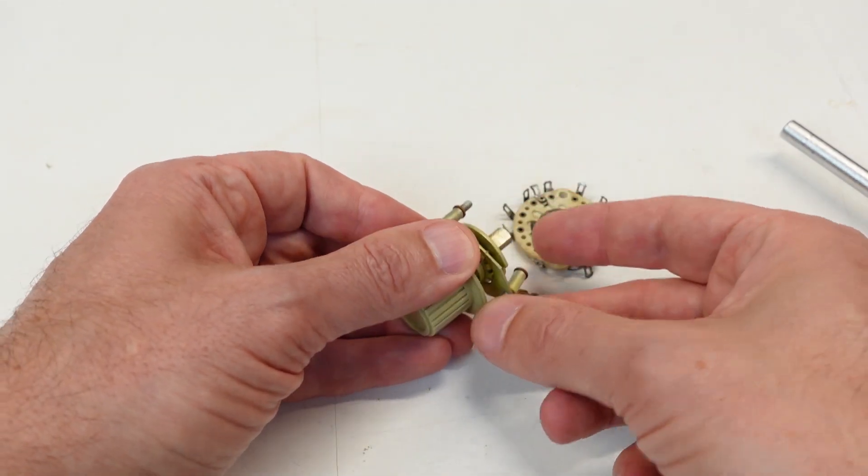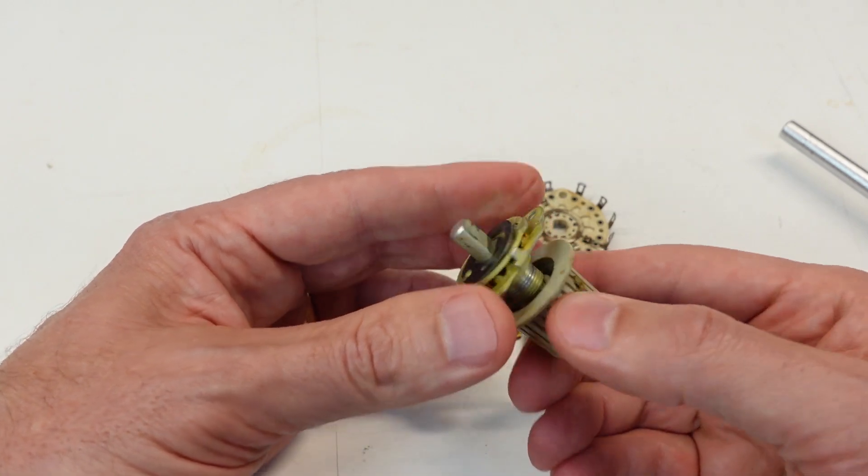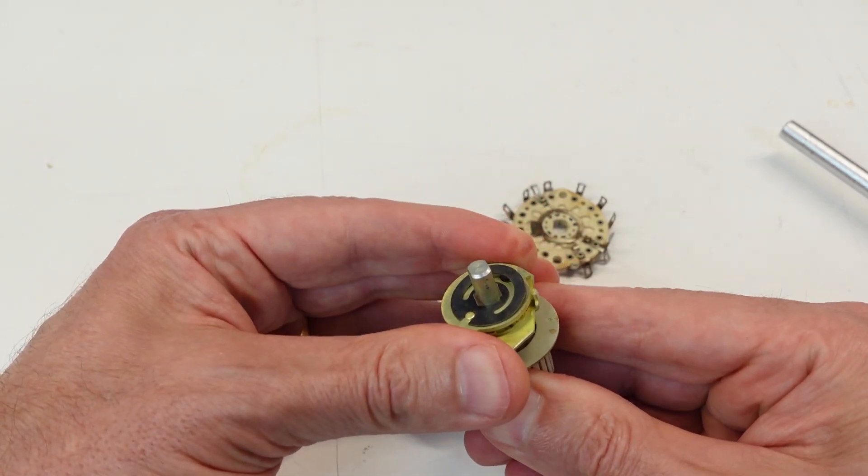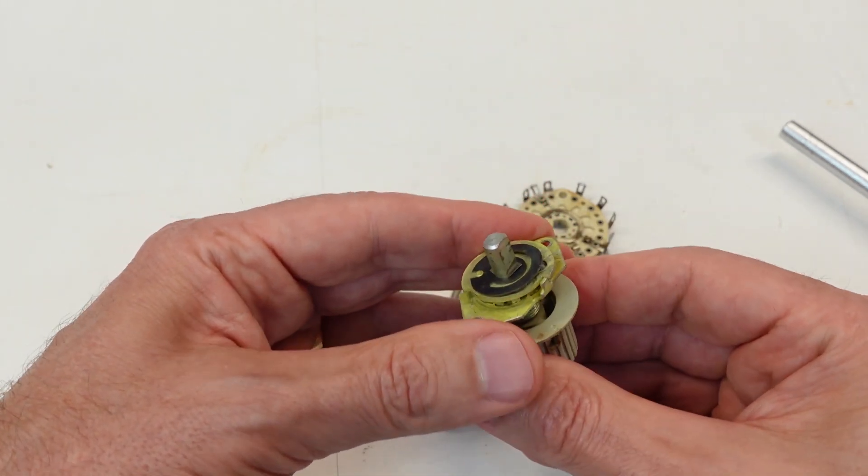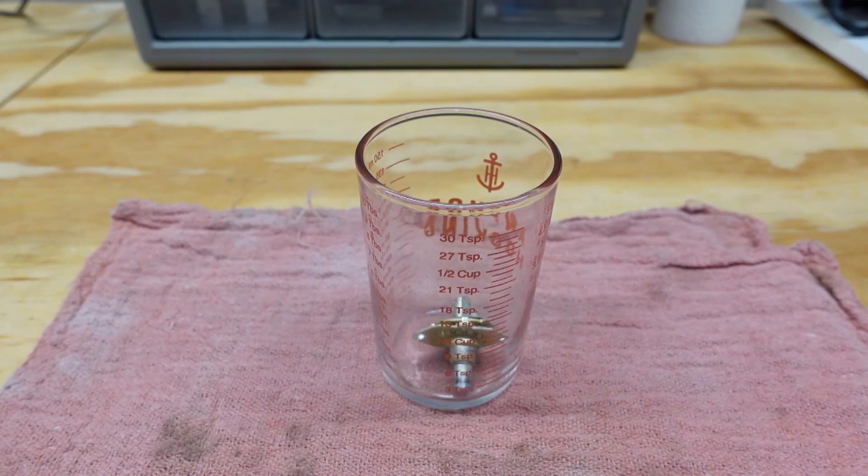Sometimes this happens when the shaft galls into the bushing, but most of the time it's just the oils in the grease that have evaporated over time and left the clay fillers behind. I need to give the penetrating oil some time to work.